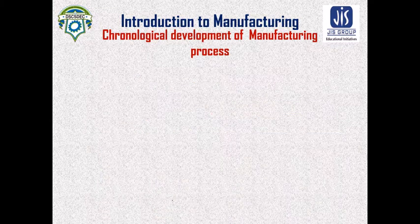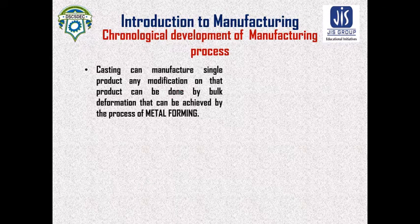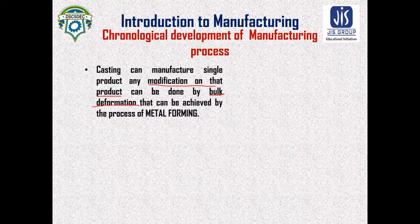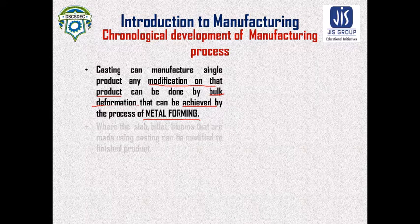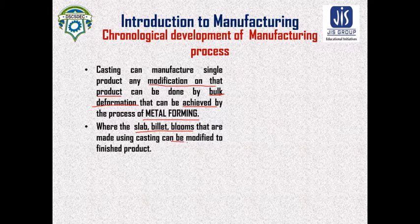After casting, there is a need for modification on the product. That modification can be done using bulk deformation, achieved through a process called metal forming. In metal forming, products from casting such as slabs, billets, and blooms can be modified into finished products.